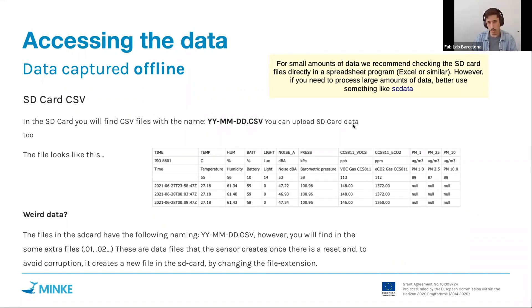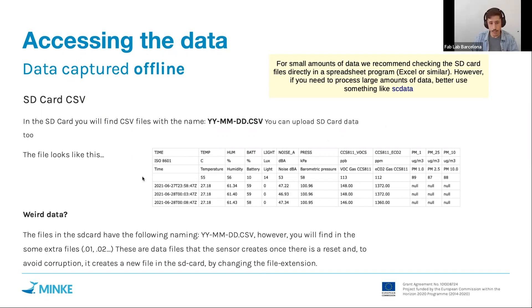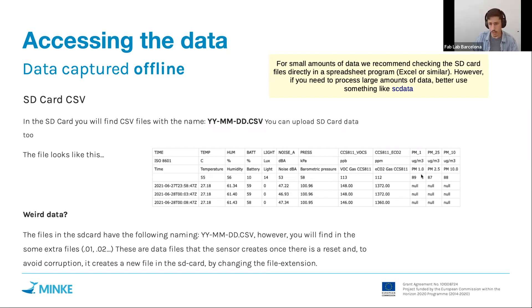Once you collect the data you can also upload it to the platform. The CSV format has a short header, units, a small description, and then a row that is very important not to delete if you want to upload to the platform, because it contains sensor IDs used to map the columns to the correct platform readings.